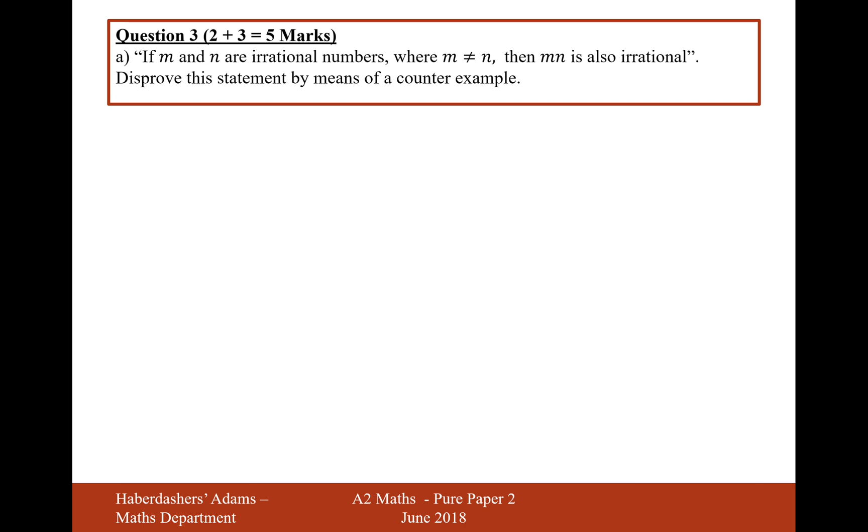We have a statement that says, if M and N are irrational numbers, so that's irrational means they cannot be represented as fractions, and therefore they might be square root numbers, E, pi,